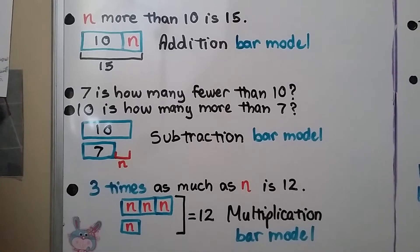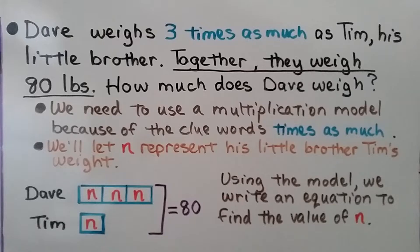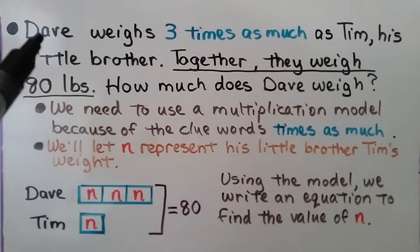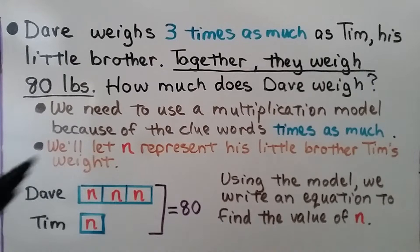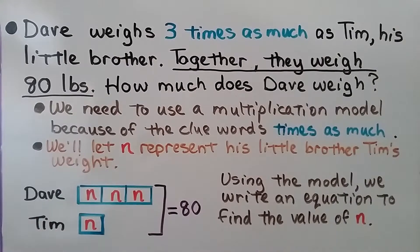Dave weighs three times as much as Tim, his little brother. Together they weigh 80 pounds. How much does Dave weigh? We're trying to find how much Dave weighs. We need to use a multiplication model because of the clue words 'times as much.' We'll let n represent Tim's weight, the little brother.